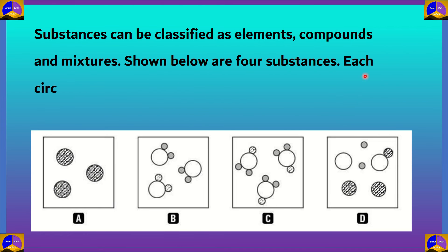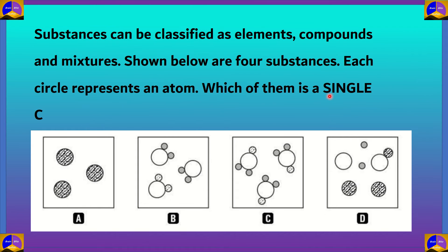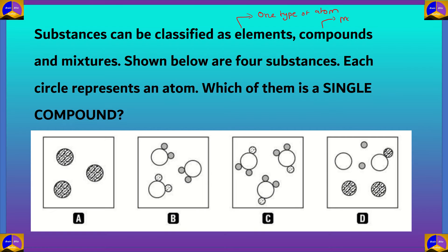Shown below are four substances; each circle represents an atom. Which of them is a single compound? In this question we are given three terms: elements, compounds, and mixtures. Elements are made up of one type of atom. Compounds are made up of more than one type of atom which are bonded chemically. Mixtures are a combination of two or more substances — they could be elements or compounds.